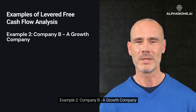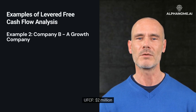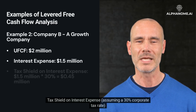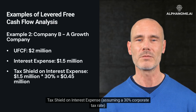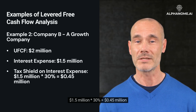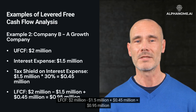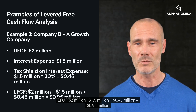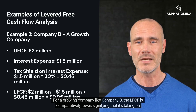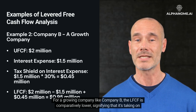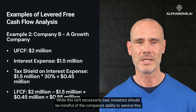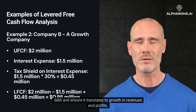Example 2 — Company B, a growth company. UFCF: $2 million. Interest Expense: $1.5 million. Tax Shield on Interest Expense, assuming a 30% corporate tax rate: $1.5 million multiplied by 30% equals $0.45 million. LFCF: $2 million minus $1.5 million plus $0.45 million equals $0.95 million. For a growing company like Company B, the LFCF is comparatively lower, signifying that it's taking on more debt to fuel its expansion. While this isn't necessarily bad, investors should be mindful of the company's ability to service this debt and ensure it translates to growth in revenues and profits.